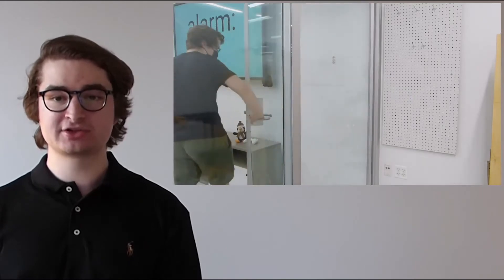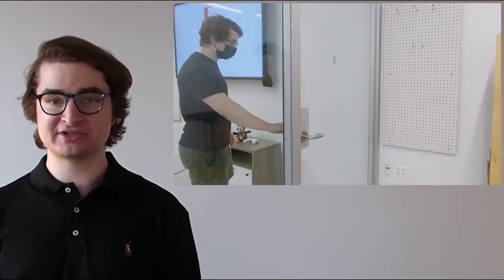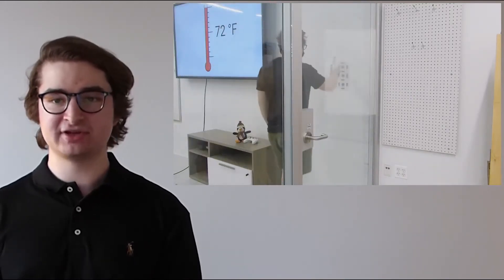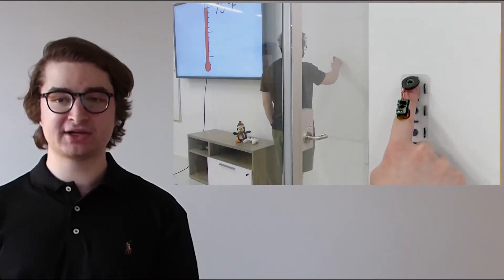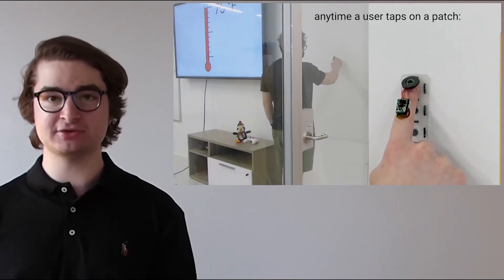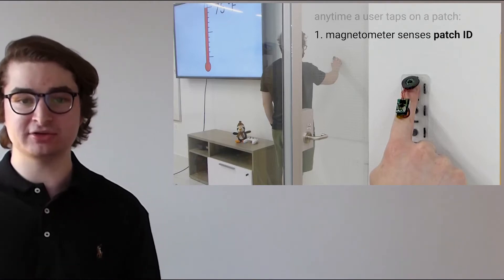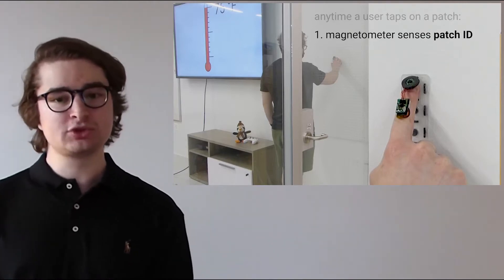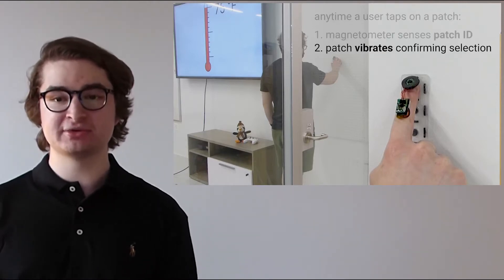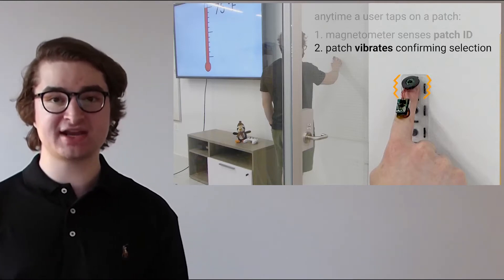Next, the user walks to a patch on their wall that controls their thermostat. As the user slides their finger to adjust the temperature, MagnetIO senses which part of the patch the user is touching using a magnetometer built into the coil. According to where they touch, they receive haptic feedback to indicate the setting that they have selected.